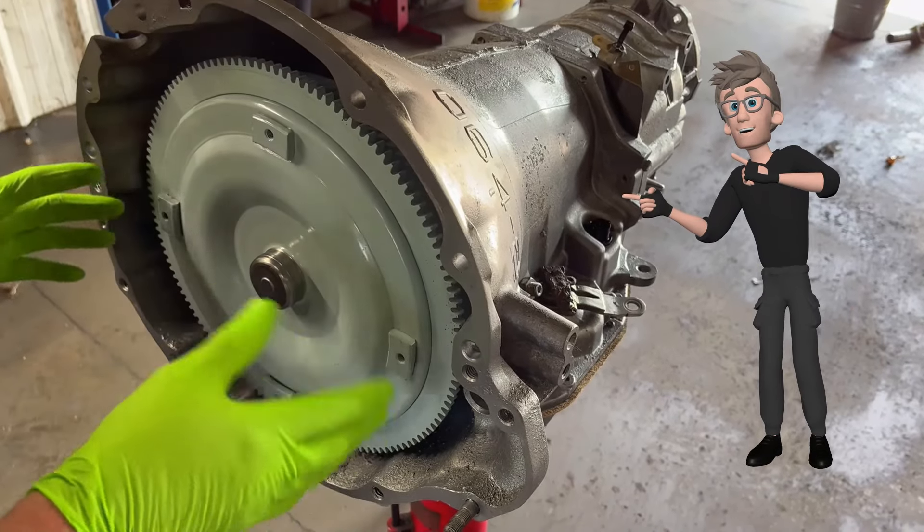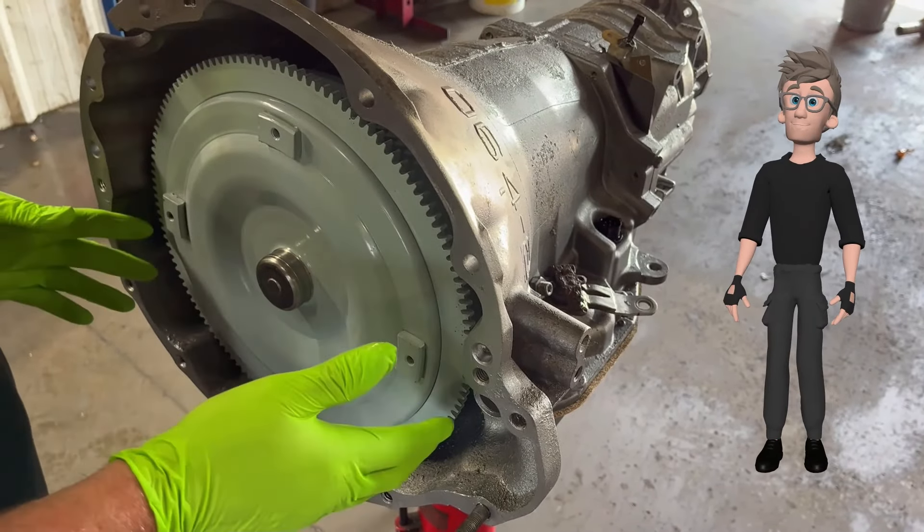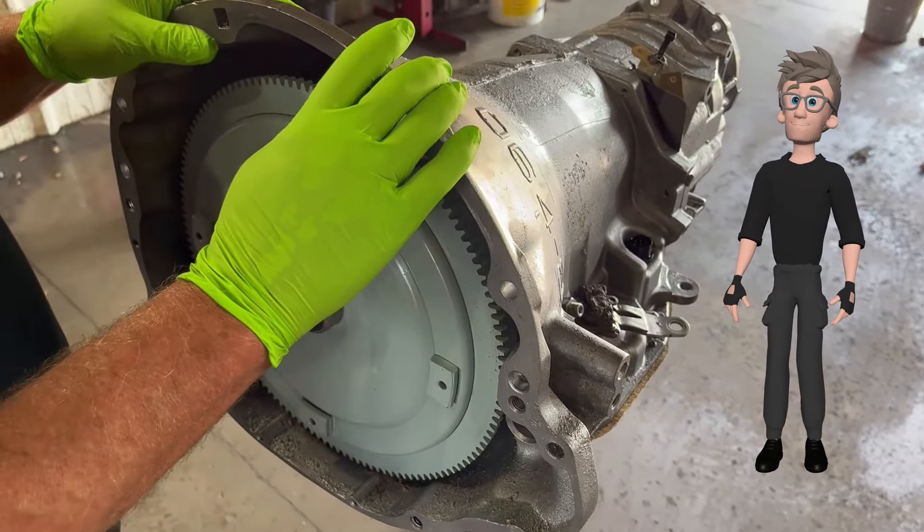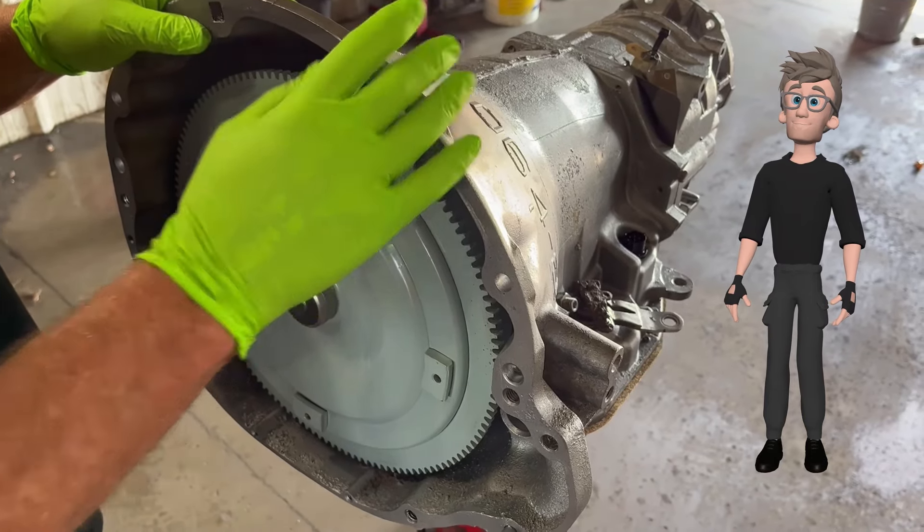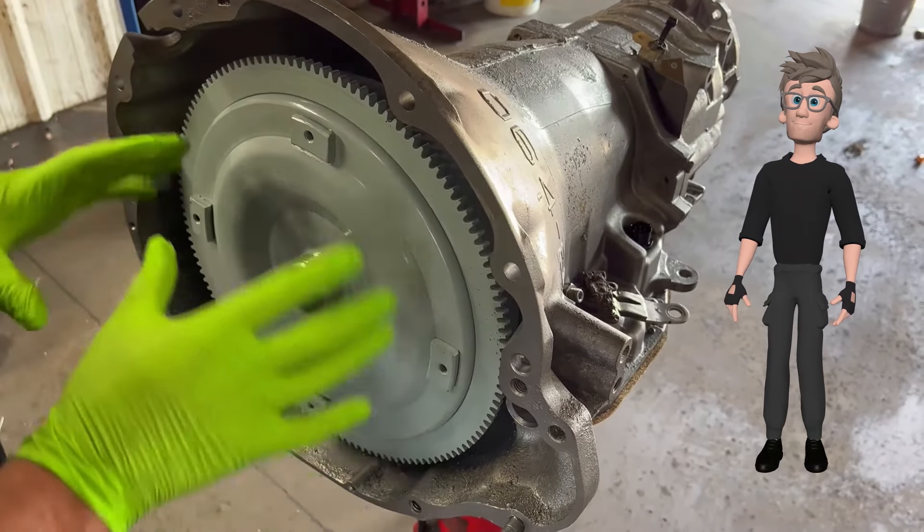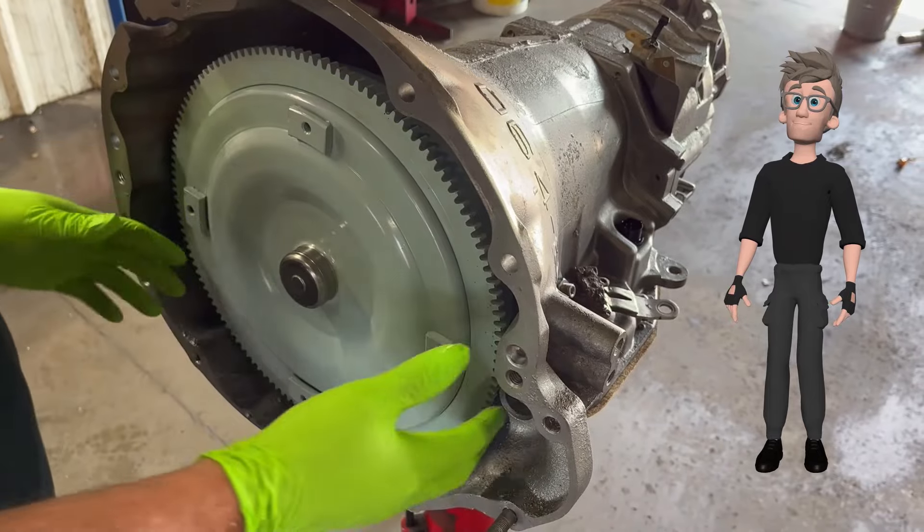Hey guys, so we got an A518 46RE. This is in a 97 Dodge 1500 with a 5.2. What I want to show you is how to get your torque converter set all the way back if you're going to install this transmission.